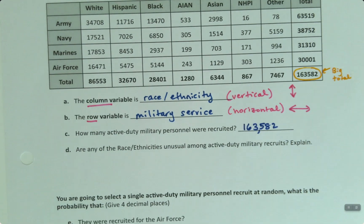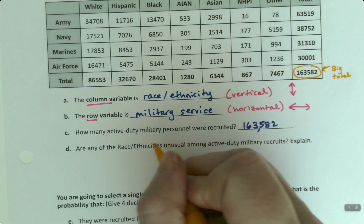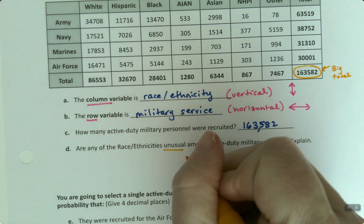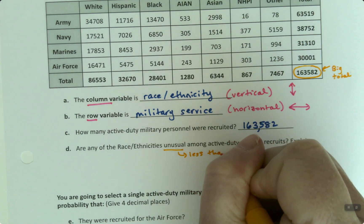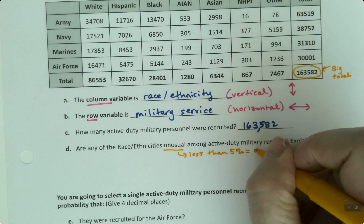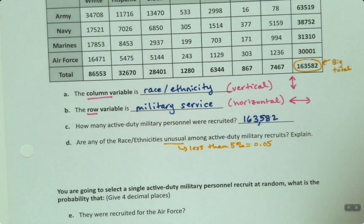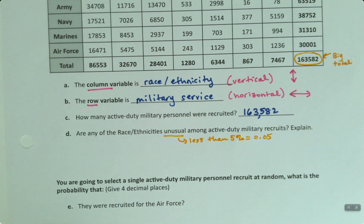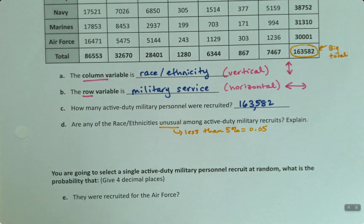Now, are any of the races and ethnicities unusual among active-duty recruits? So let's remind ourselves. Unusual is less than 5%, or 0.05. We learned that in Chapter 3, as a matter of fact. So it was a couple chapters ago. So would any of these values be unusual? Well, we can find out.